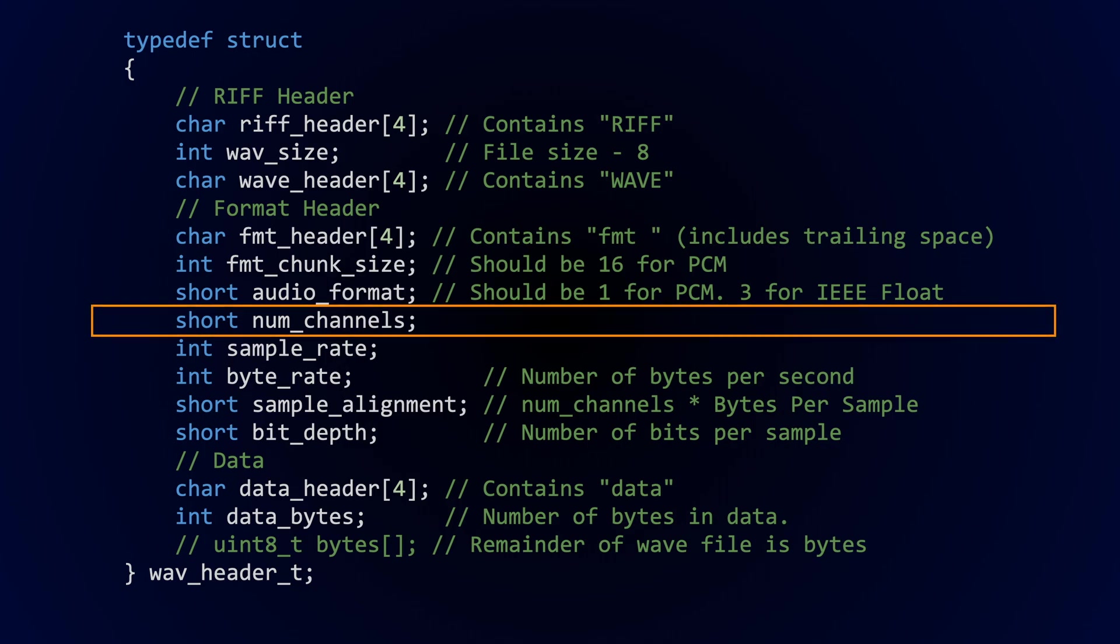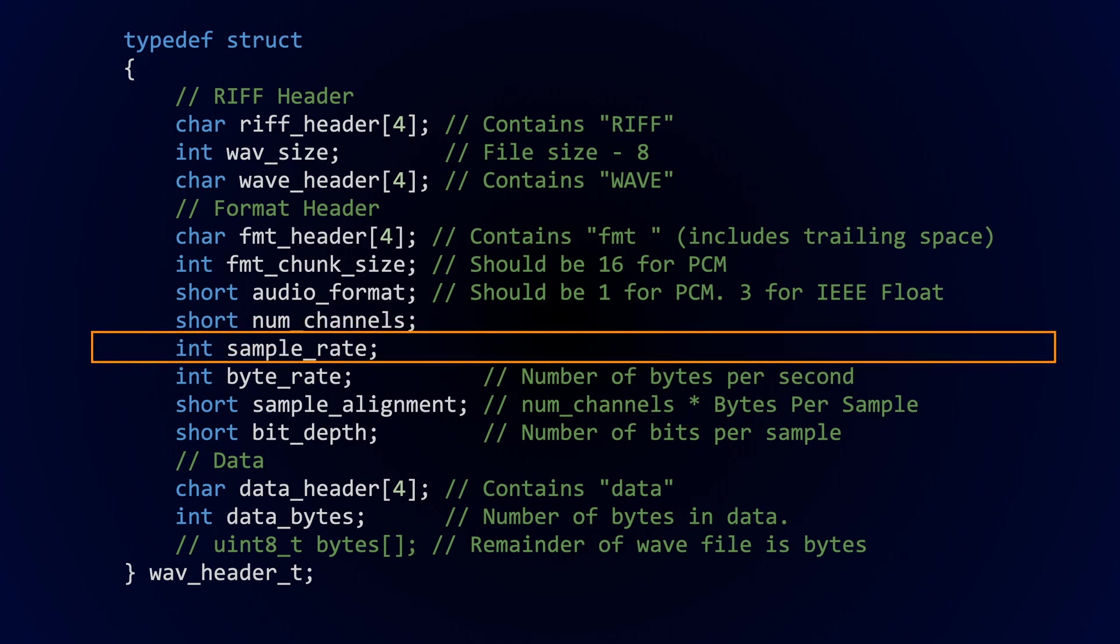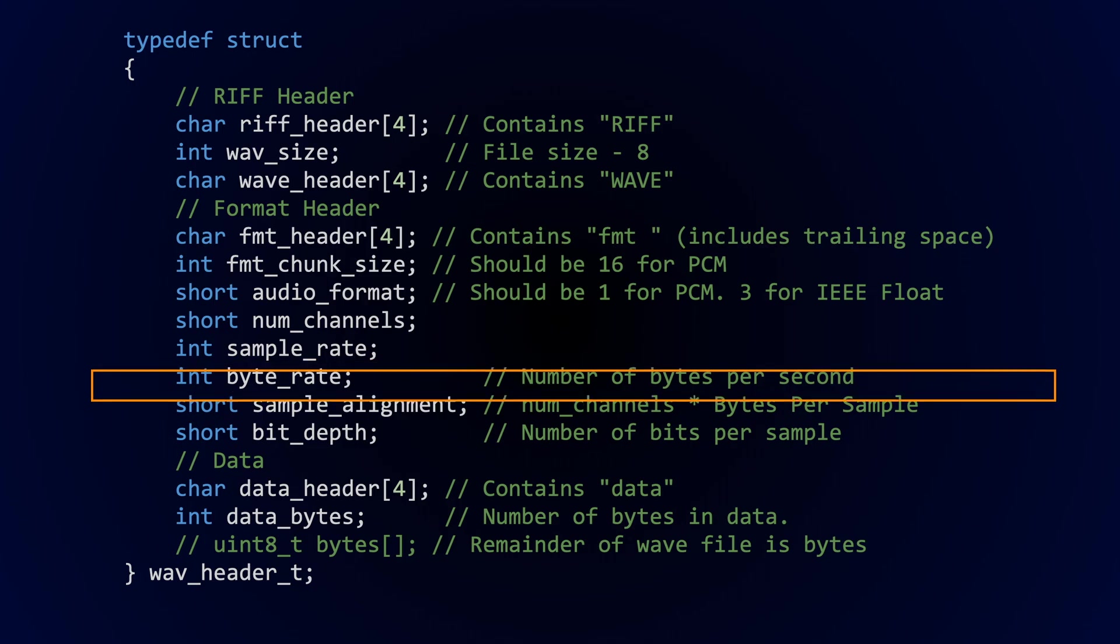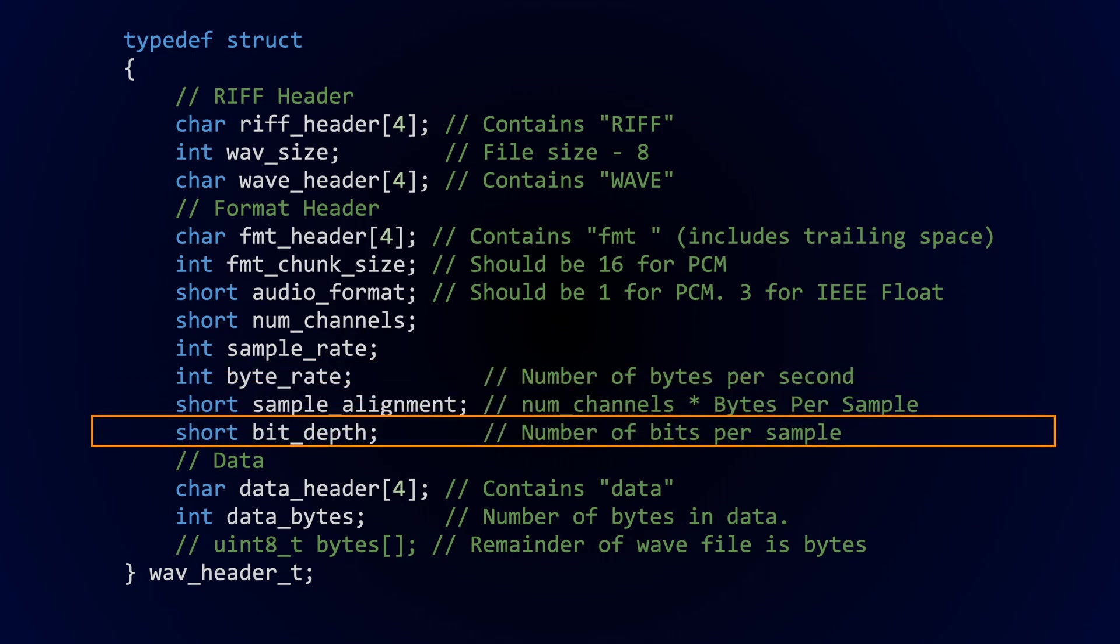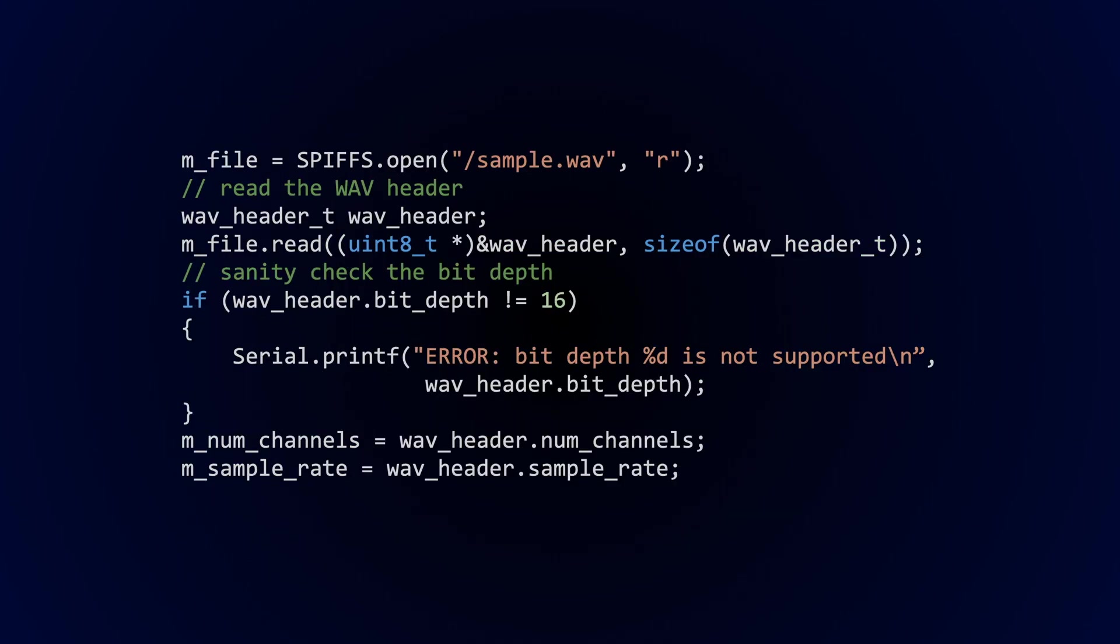We need the sample rate to configure the I2S peripheral. We also need to know the bit depth. In our code we can only support 16-bit samples but the code could easily be extended to support other bit depths. Here's some very basic code for reading the WAV file header. We can read from the file directly into our C structure and then pull out the details we're interested in from that C structure.